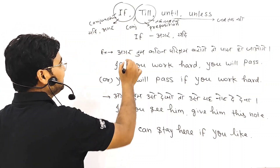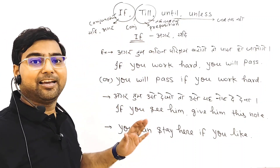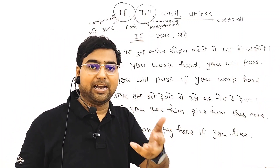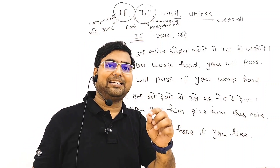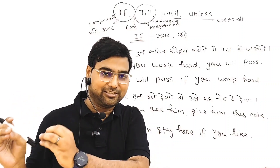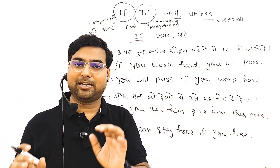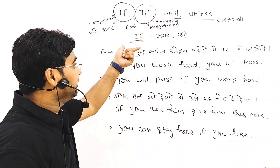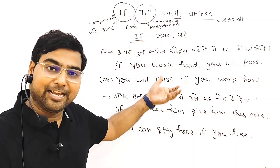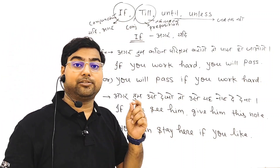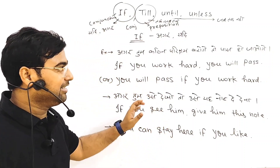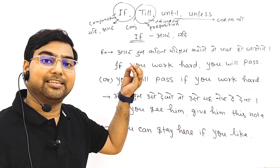The first use is 'if.' If is a subordinating conjunction. Subordinating means dependent. In the last class, we studied dependent clause and independent clause in detail. If you want to study those, refer to the last class. If is used in very advanced structures in the language and allows a lot of usage. Let me explain how 'if' is used.